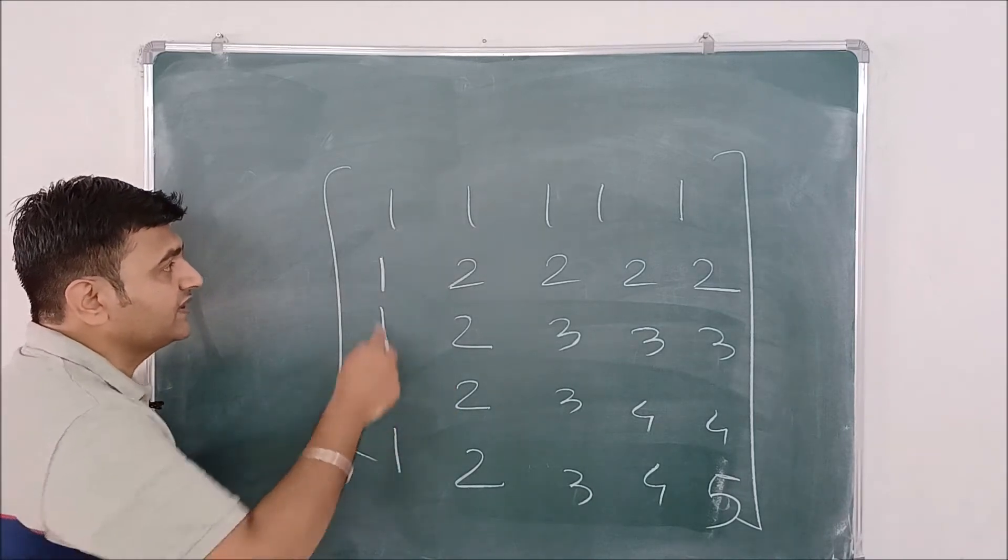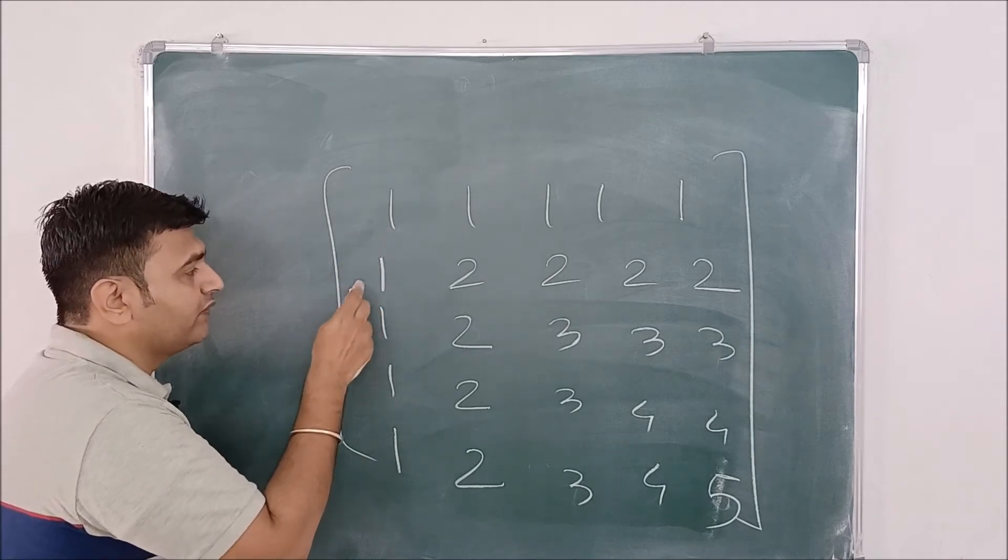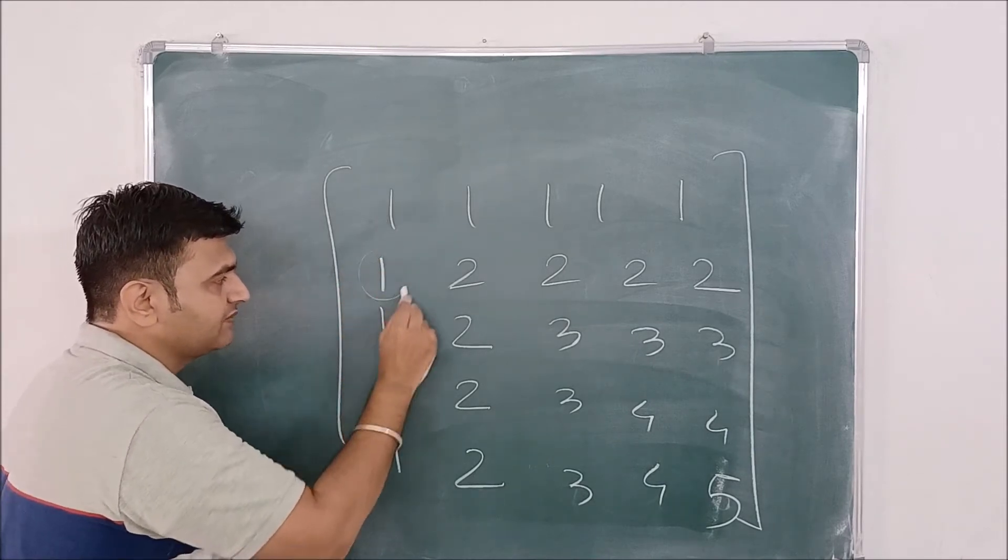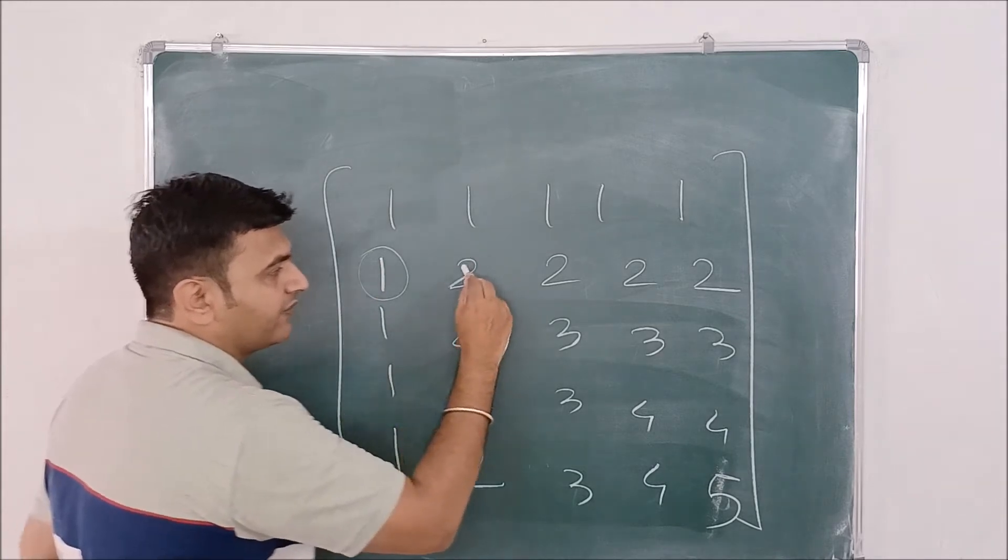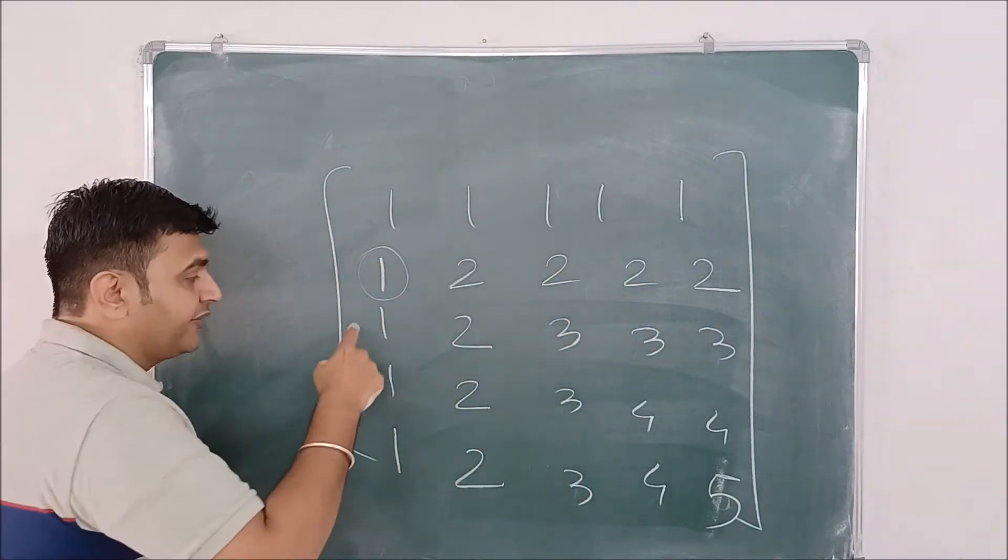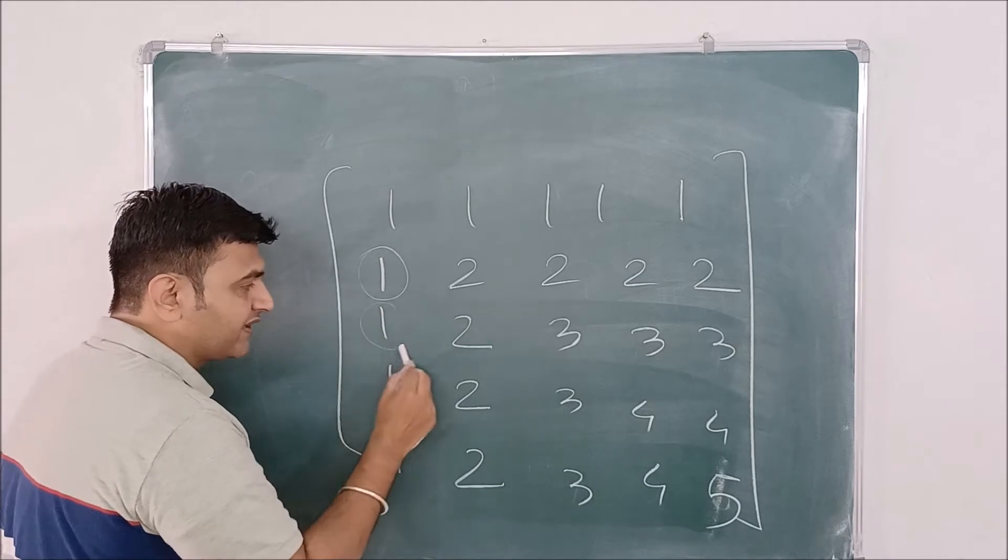Now once you see this is one, this is one, what is the obvious thing you will do? You will do R2 minus R1. So this becomes zero and this will become one, one, one, one. R2 minus R1. Then you do R3 minus R1, so this also becomes zero.